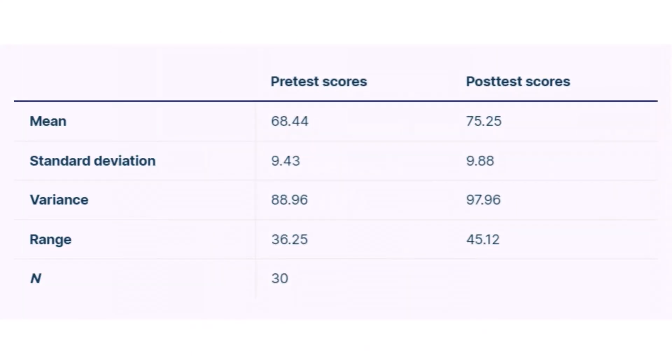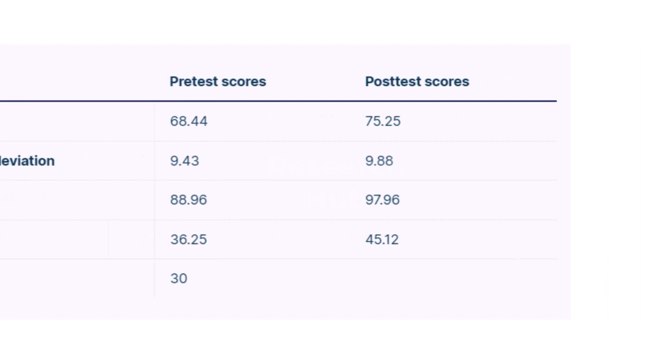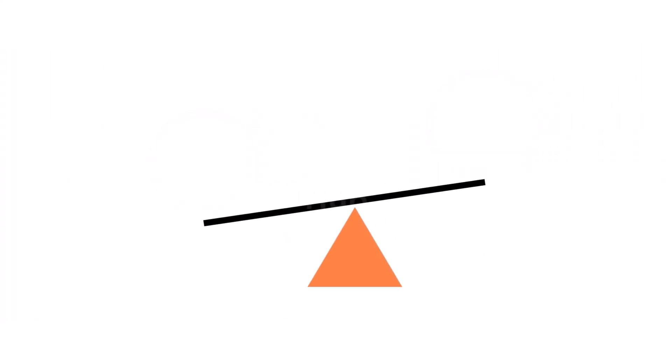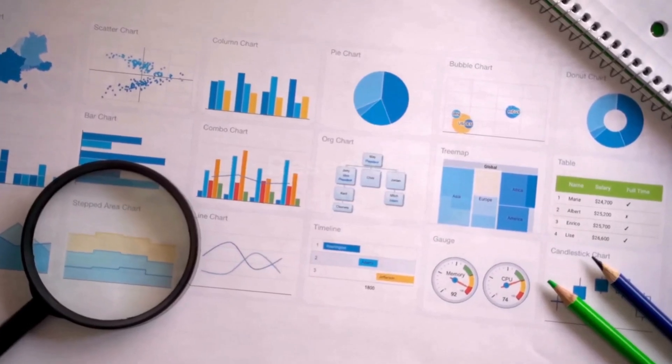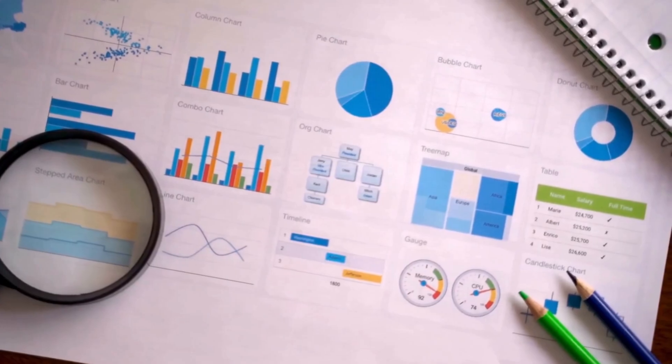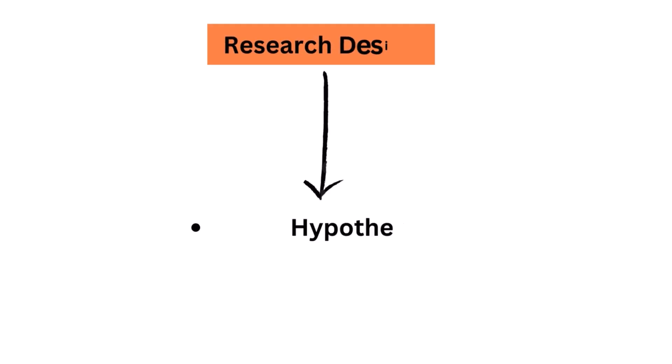Choosing which variables to measure is central to good experimental design. Variables are fundamental components of research that allow for the measurement and analysis of data. They can be defined as characteristics or properties that can take on different values.